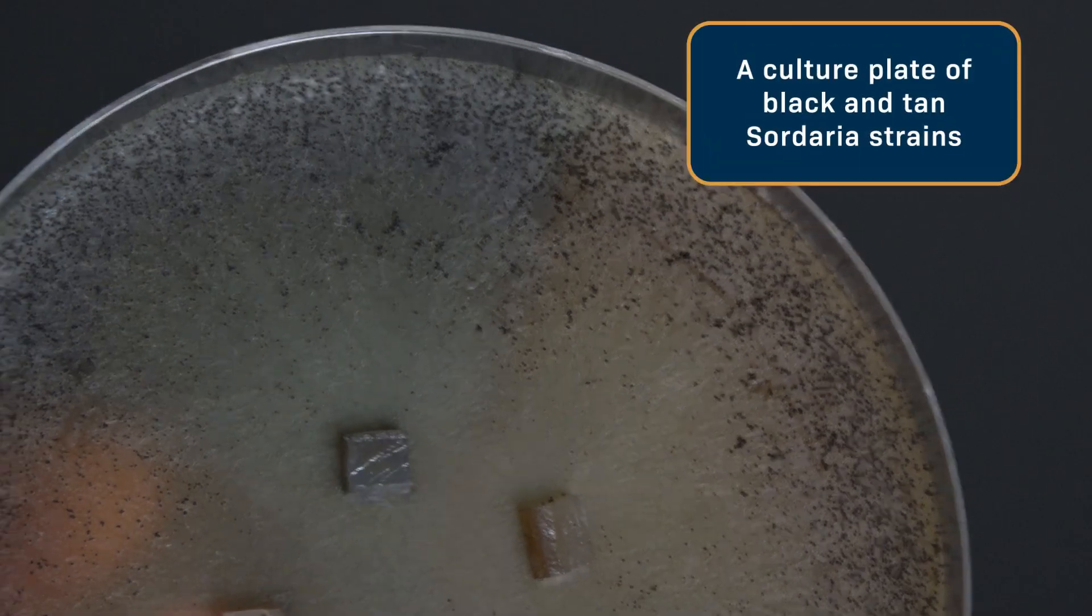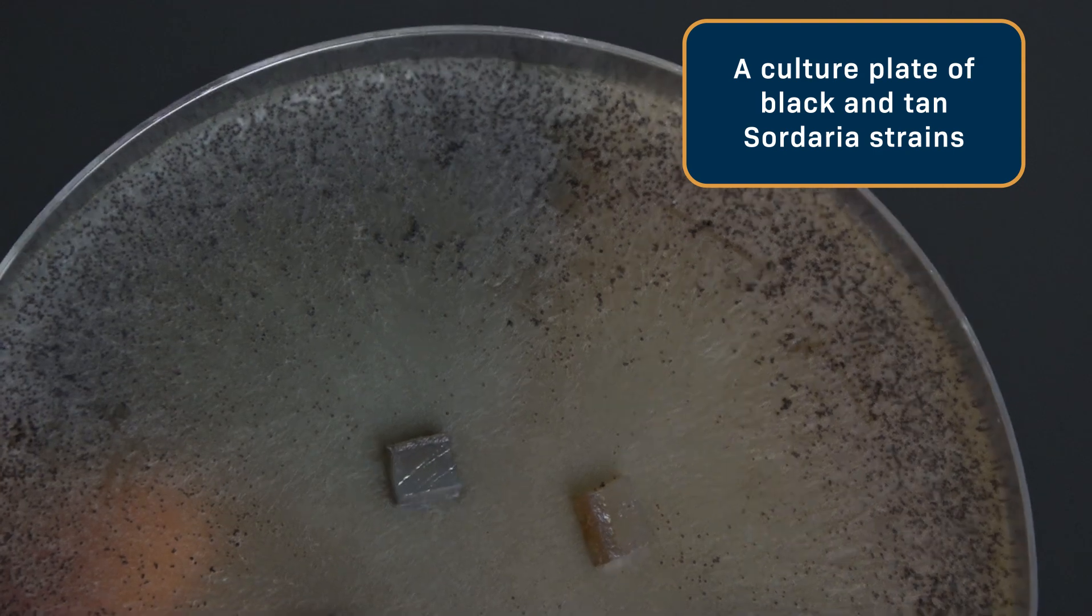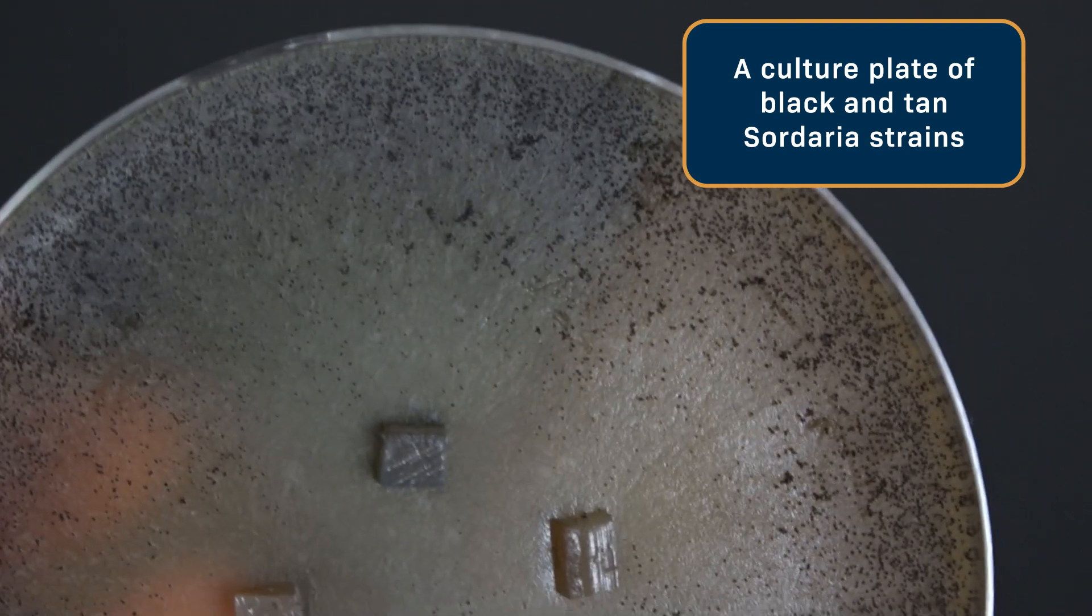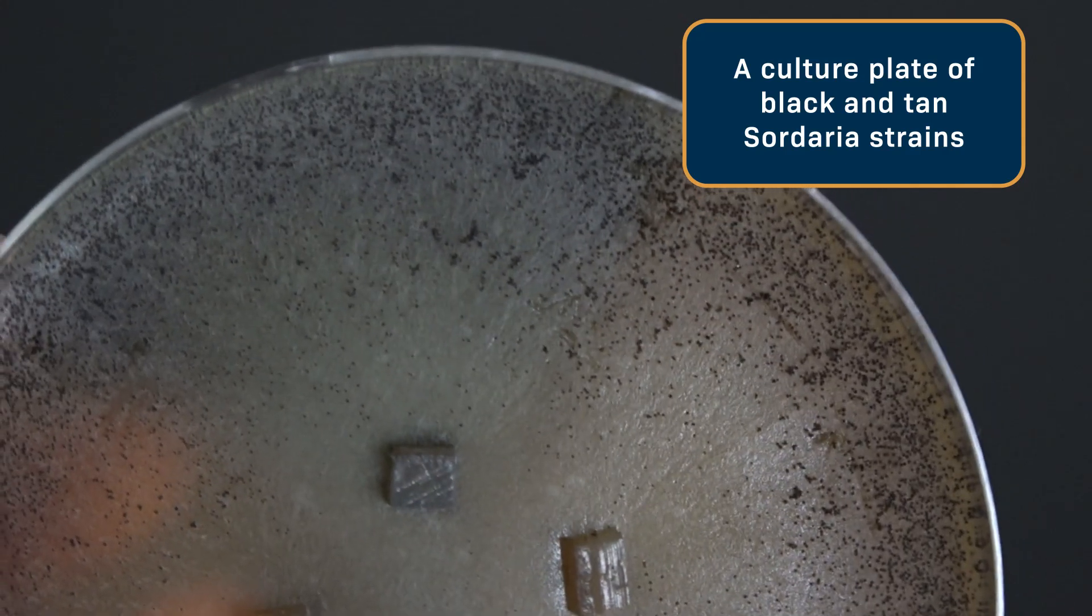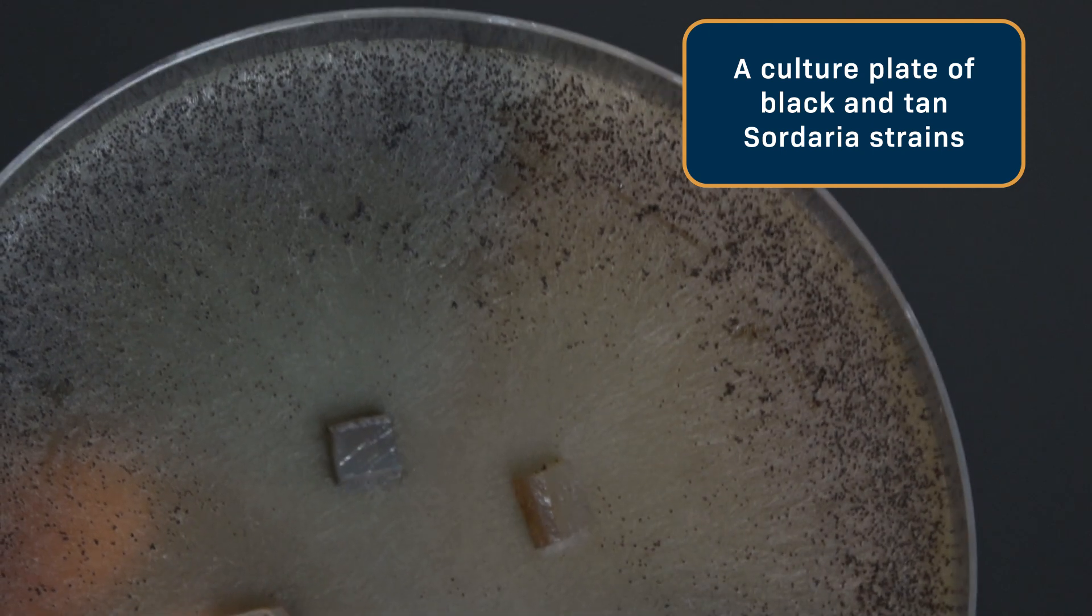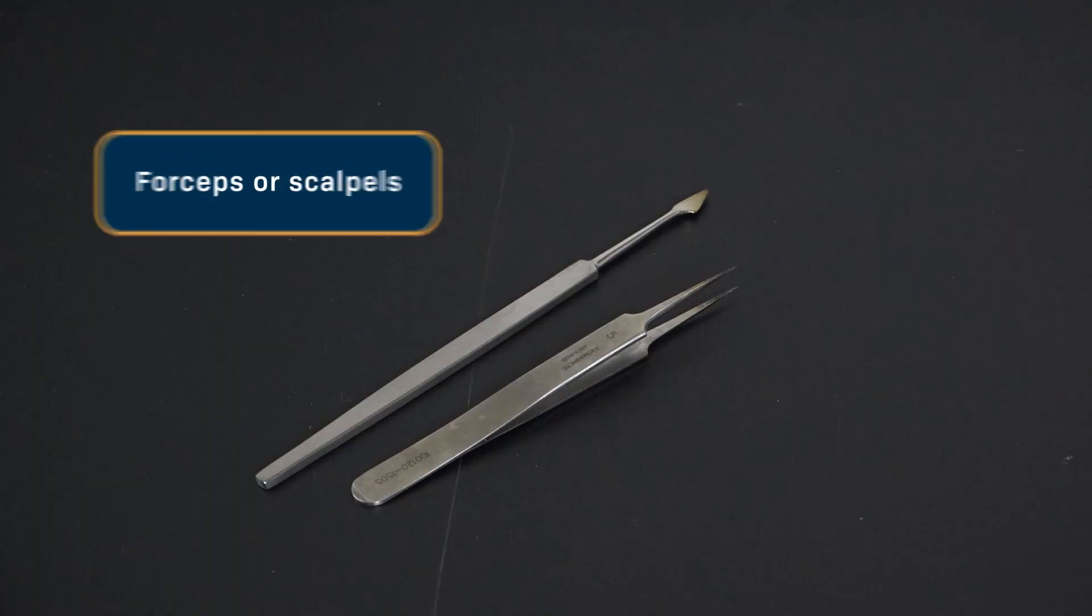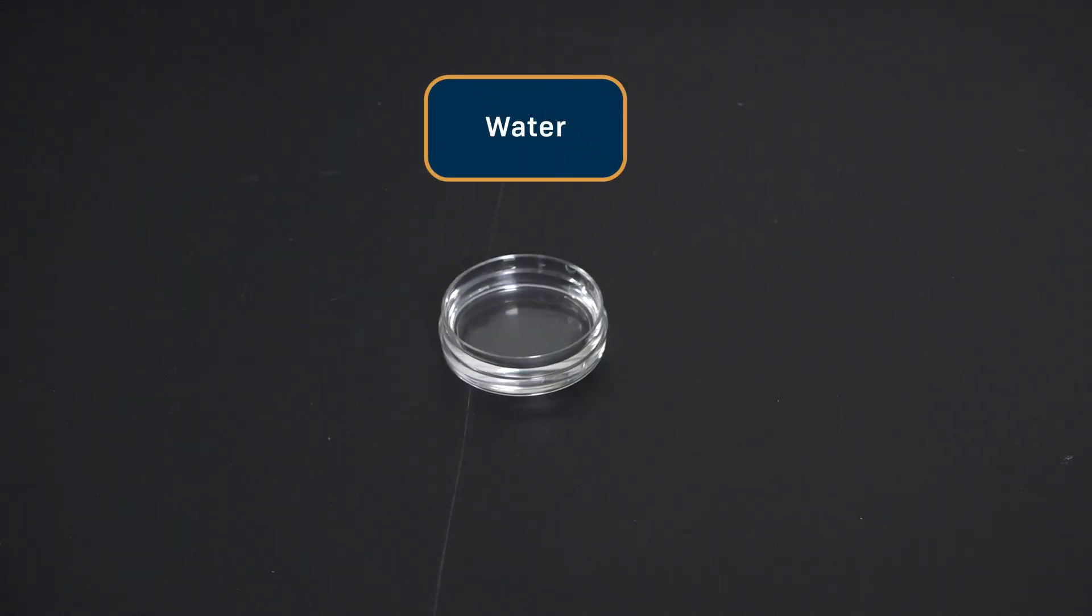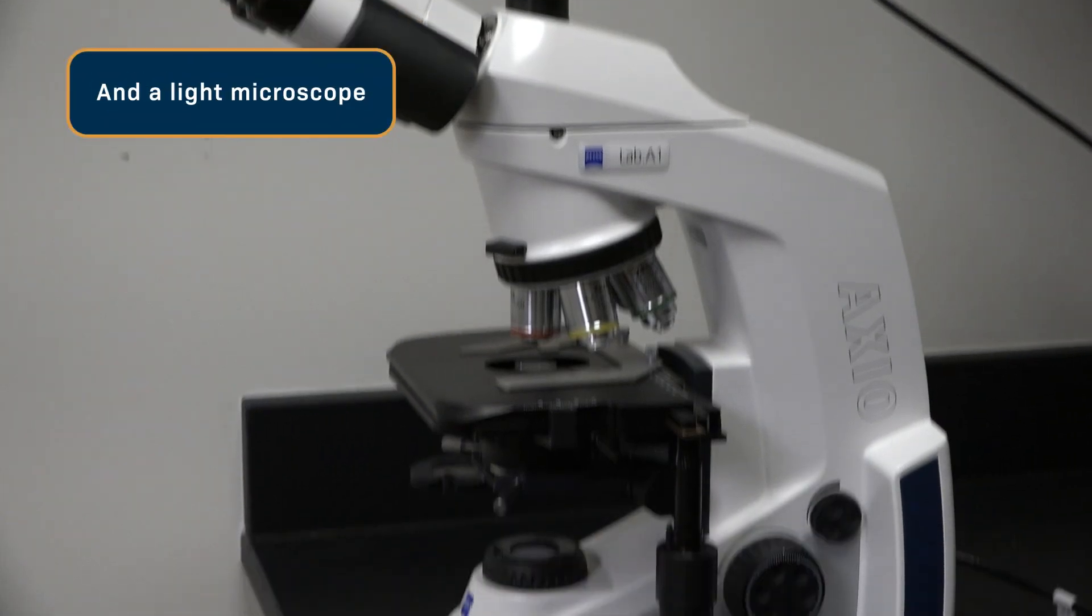We'll need a culture plate of black and tan Sordaria strains that are getting frisky. You can buy these from biological supply companies, so don't worry about making the plates yourself. Please note that hand washing is an essential component of both sterile technique and laboratory safety. I washed my hands before handling the Sordaria plate to prevent contamination of the sample. Forceps or scalpels, a transfer pipette, water, microscope slides and cover slips, a pencil, and a light microscope.